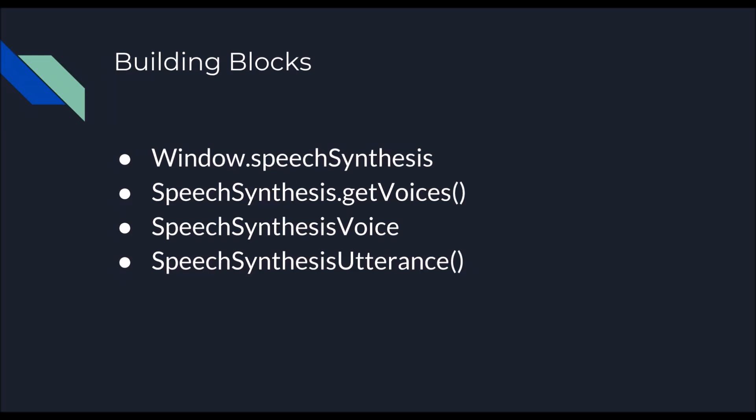The speech synthesis interface provides many features by using which we can provide a variety of voices in different pitches and tones. Then there is the getVoices function which we can use to get a list of all available voices. This function will return the list of voices, and this is basically done by the operating system in which the browser is running, because every major operating system has some kind of speech synthesis and speech recognition features, and the browser uses them to make the speech API work.